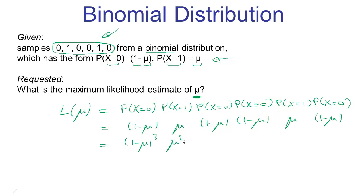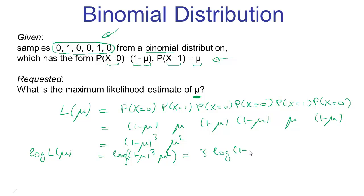It is often convenient to work with the log of the likelihood rather than the likelihood itself. The log likelihood equals the log of (1 minus mu)^3 times mu squared, which using properties of logarithms simplifies to 3 times the log of (1 minus mu) plus 2 times the log of mu. Since the log is a monotonic transformation, maximizing the log likelihood gives us the same optimal parameter mu as maximizing the original likelihood.